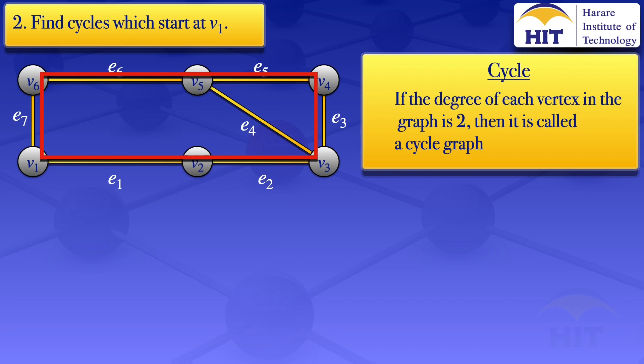So the first cycle starting at v1 moves: v1, e1, v2, e2, v3, e3, v4, e5, v5, e6, v6, e7, then back to v1. That's one cycle we have there.